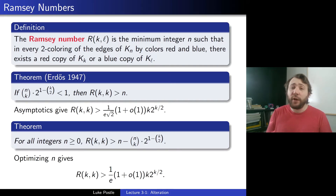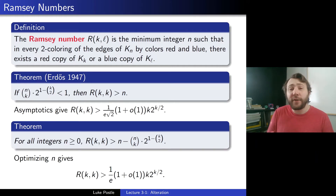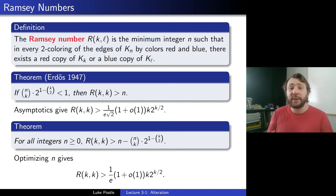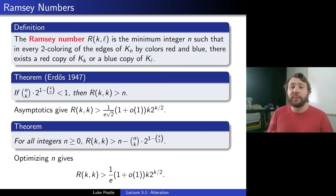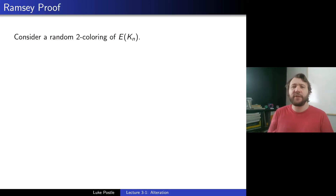That's not a big difference in the grand scheme of things, considering the best known upper bounds are on the order of 4 to the K, but it's impressive nonetheless and shows that using different methods can provide different bounds. So let's get to the proof.